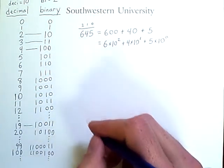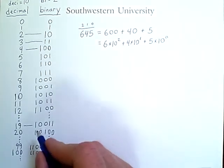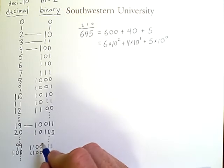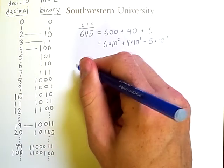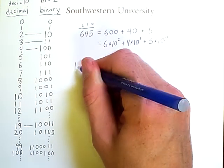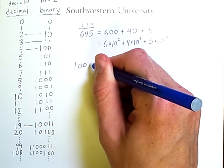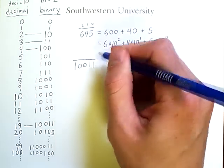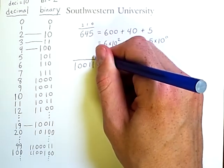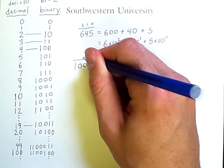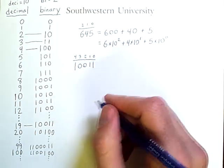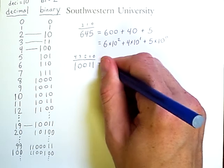We can do something similar with binary numbers. This number here, 1, 0, 0, 1, 1, equals 19 for the following reason. If I write out 1, 0, 0, 1, 1, and then put exponents over these positions, 0, 1, 2, 3, 4, I will be able to expand this, but instead of using 10, which is used in decimal, I will use 2, because binary uses a base of 2.